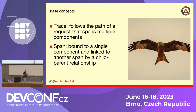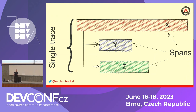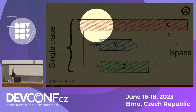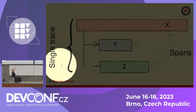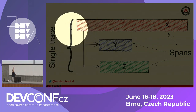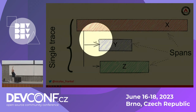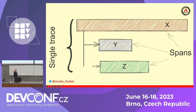The idea is very simple. You have a trace, which is basically a single request. Then you have spans. A span is the execution of that trace in a component. Here is a single trace — a single request. In component X there is this span, in Y this span, in Z this span. Every component except the entry point has a parent ID, so you can trace every span back to its parent span.